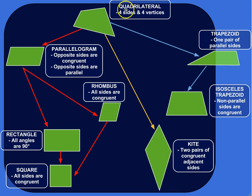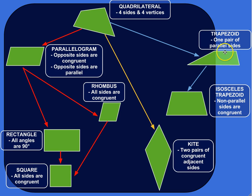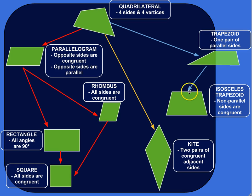Now let's look at the trapezoid line in the quadrilaterals. A trapezoid has one pair of parallel sides — two sides that are parallel to each other. That's all it takes to be a trapezoid. And then a subclass of the trapezoids are the isosceles trapezoids, where the non-parallel sides are congruent. So this side is parallel to this side, and the two sides that aren't parallel — this side and this side — are congruent.